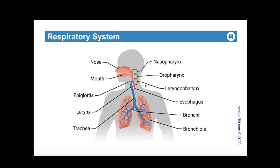The function of the upper airway is to warm, humidify, and filter the air that we breathe. Then we have our lower airway components, which include the bronchi, bronchioles, alveolar ducts, and alveoli. The key function down there is gas exchange, so alveoli are the functional units for gas exchange.